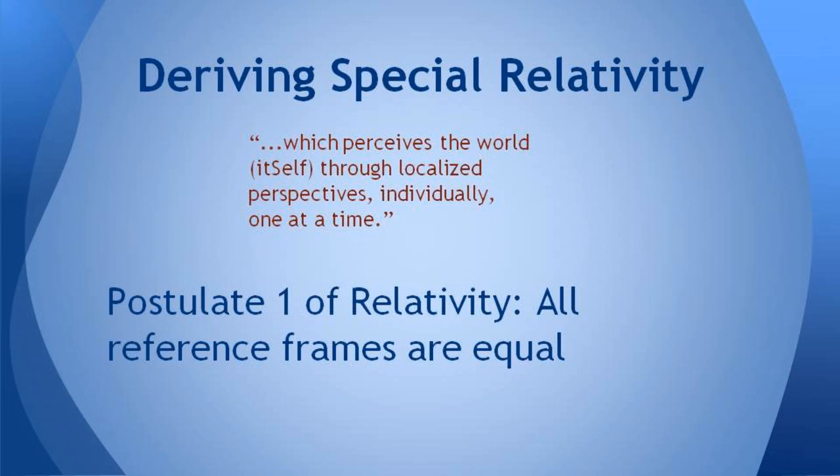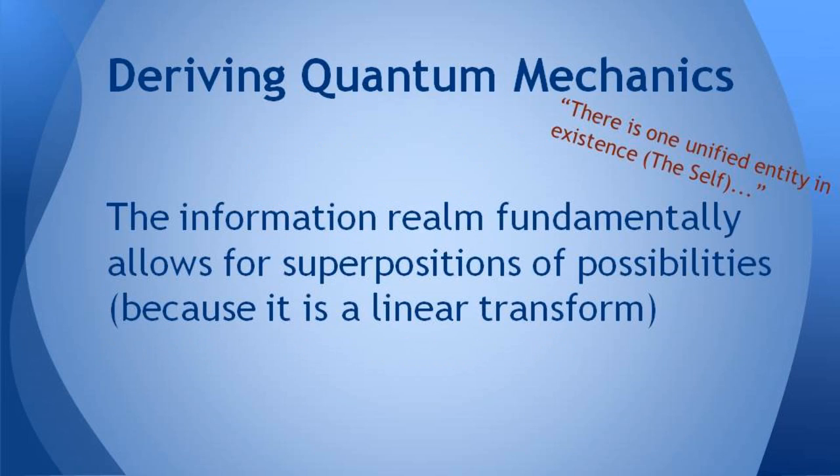Now the second statement in the perennial wisdom is which perceives the world itself through localized perspectives individually one at a time. And that's essentially postulate one of special relativity. All reference frames are equal. If the oneness is perceiving itself through various reference frames, it would all have to be by symmetry essentially equal.